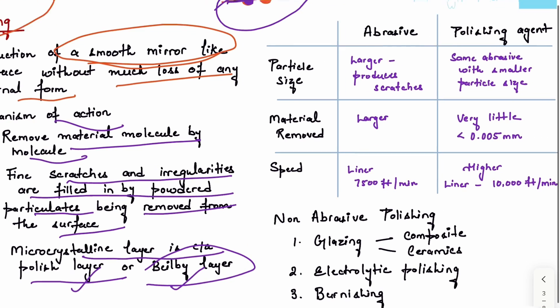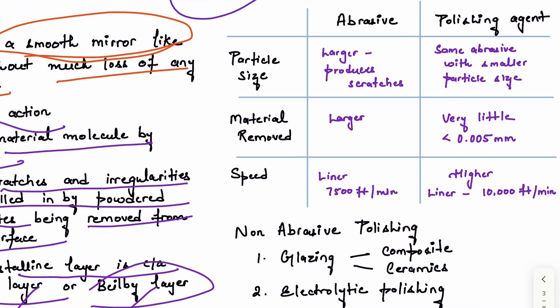What's the difference between abrasion and polishing? In abrasive agents, we have larger particle size and they produce scratches. In polishing agents, we can use the same abrasive but with small particle size. Material removed is larger in abrasion; material removed in polishing is very little, less than 0.005mm.